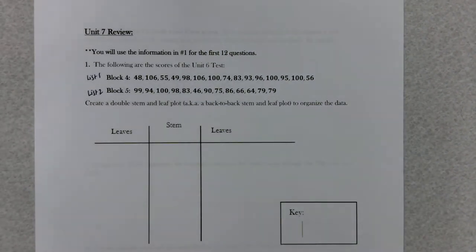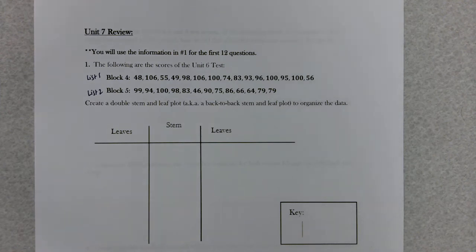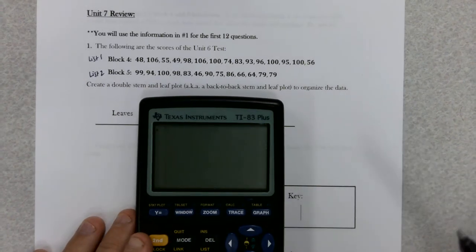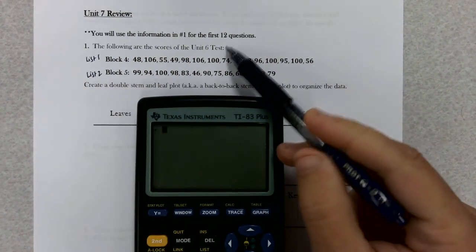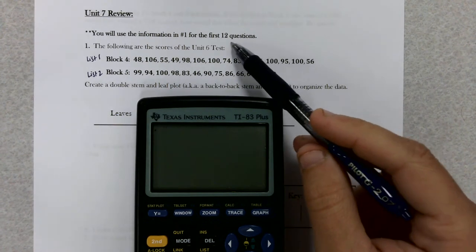All right everyone, if you've stuck with me we are on the final review of Algebra 1. This is Mr. Harding and we are going to finish up with the Unit 7 review. Unit 7 is a lot of data collecting and data analyzing, so we can use our calculator for a lot of it. You'll notice you can use the information here for the first 12 questions, and I think the Unit 7 review is 17 questions total.